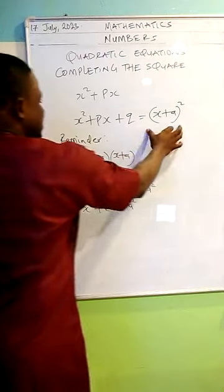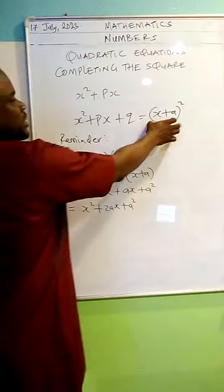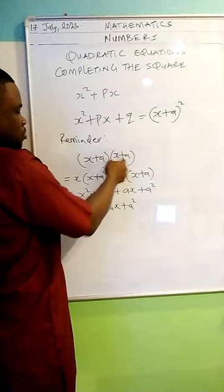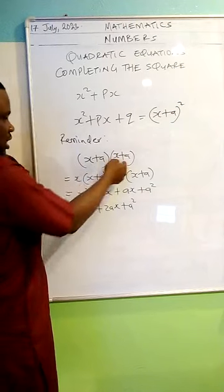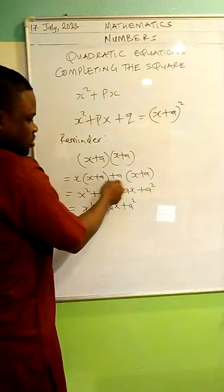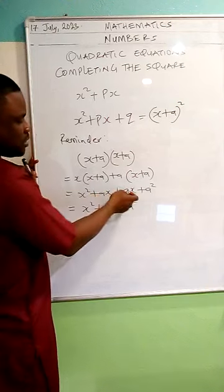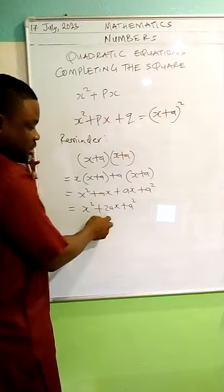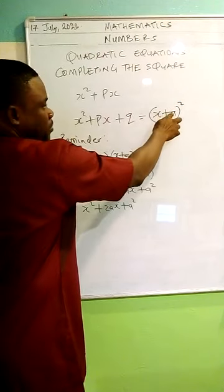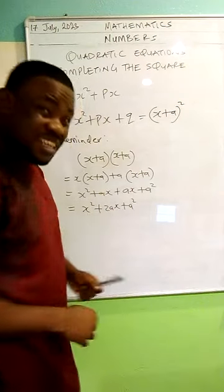Just a reminder: if I expand x plus a all squared, this is the same as x plus a times x plus a. So x times the whole bracket plus a times the whole bracket. I know that x times x gives x squared, and adding the ax terms: 1ax plus 1ax gives 2ax. So x plus a all squared is the same as x squared plus 2ax plus a squared if I expand it.